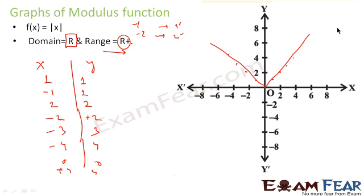From the graph we can see x can take any value from −∞ to +∞, so domain is ℝ. Y can take only positive values, so range is ℝ⁺. These properties can all be verified from the graph.